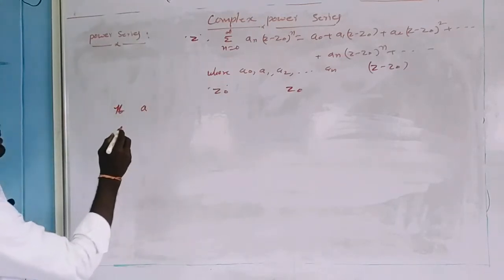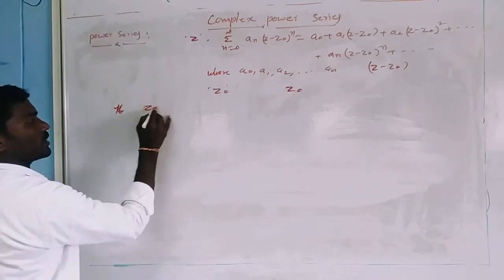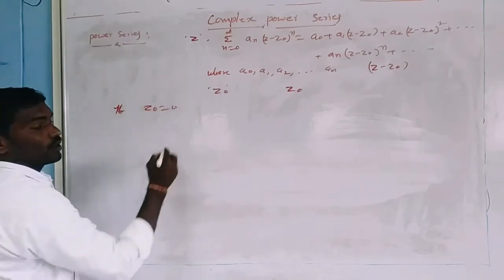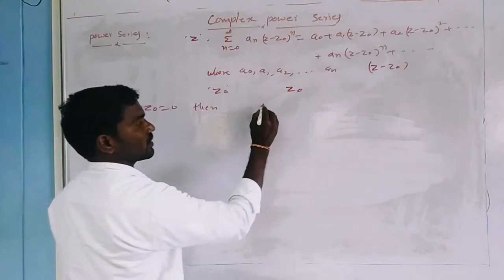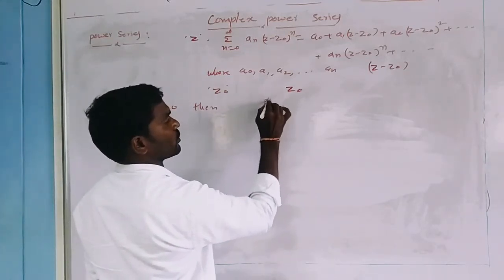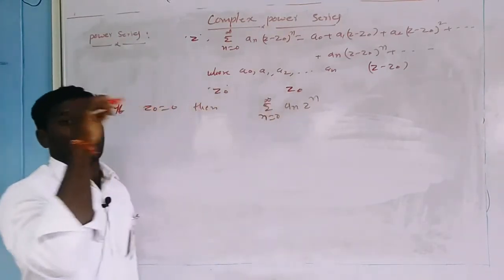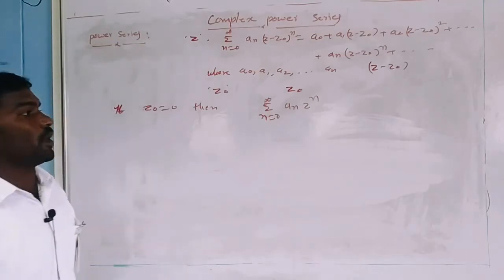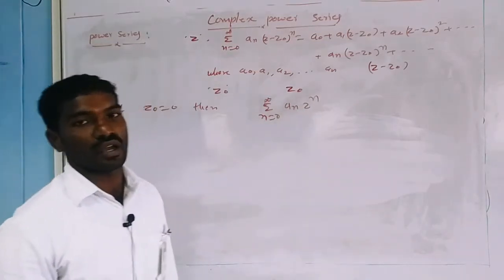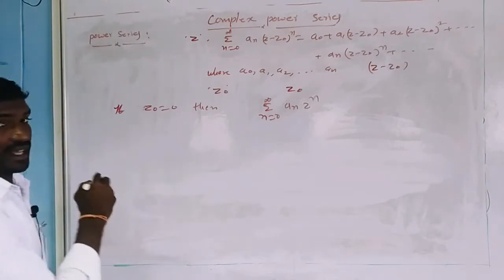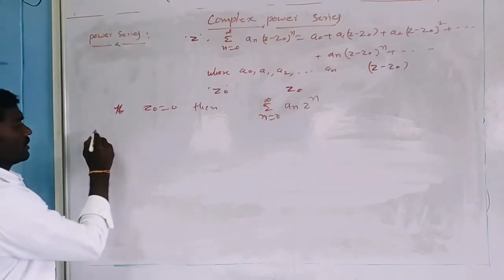If Z-naught equals 0, then the series summation n equals 0 to infinity of aₙ into Z power n is called the power series in powers of Z.